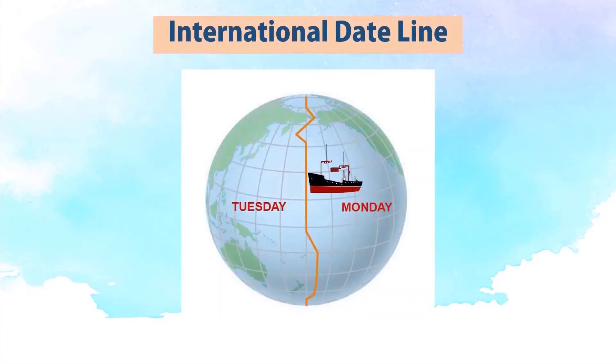When a ship crosses the international dateline from west to east, it gains a day. From Monday, it will suddenly become Tuesday.